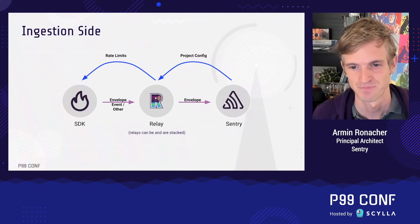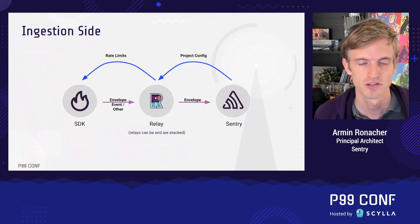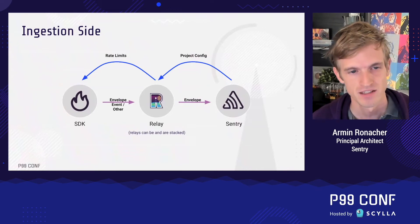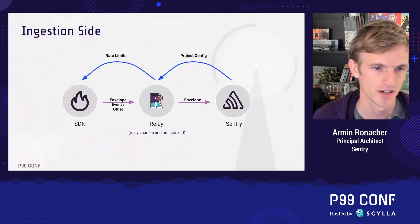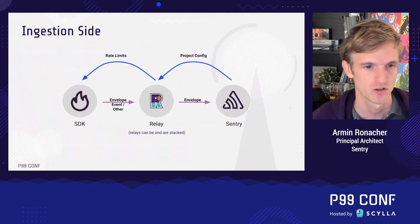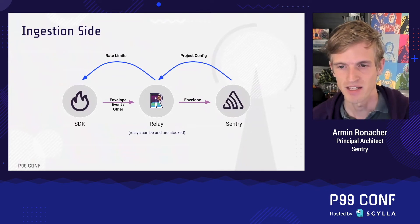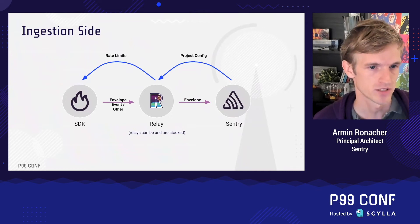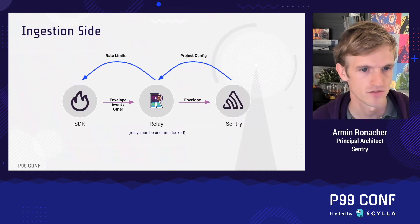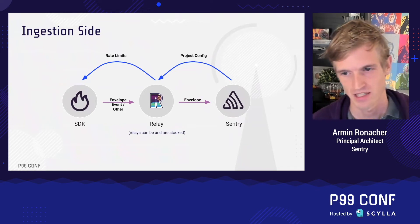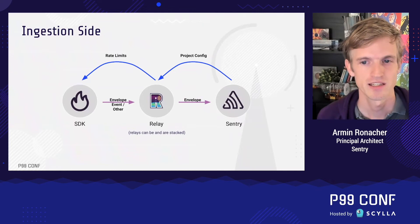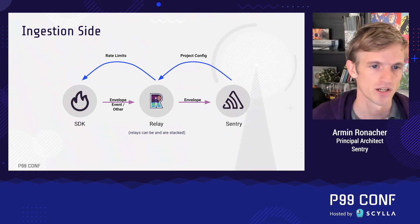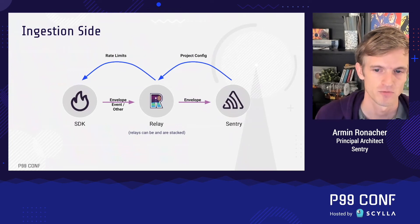We run at least two relays in series: a point of presence and then the innermost one. Envelopes can also be chained on the client side — for example, a React Native SDK creates an event, wraps it in an envelope, routes it on the same device to an Android SDK underneath, which augments the data and sends it onward. The system also has a reverse path: Sentry communicates project configs to relay for processing decisions like PII stripping, and relay propagates rate limits back to the client SDK so it can throttle sending when a customer is over quota.